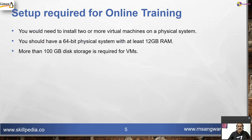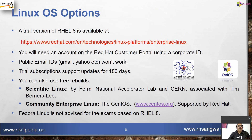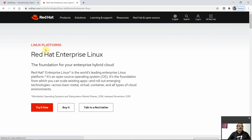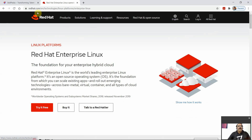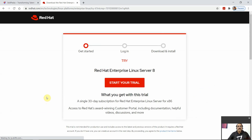Linux operating system options are available. It's not that you have to use RHEL 8 only. The trial version is available at redhat.com/en/technologies/linux-platform/enterprise-linux. This is the URL where Red Hat Enterprise Linux is available and you can try it free by clicking here.